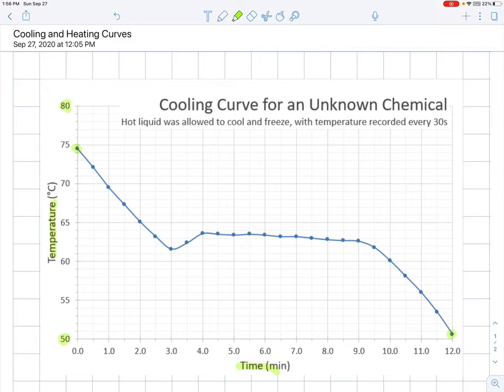So let's take a look at this graph. The temperature started off hot. The thermometer was in a liquid, in a test tube, and it cooled down. And you'll notice that after a certain point, it plateaued. The temperature stayed almost constant in this region here.